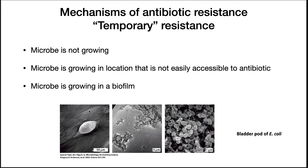This is shown on the slide — a biofilm, a bladder pod of E. coli growing in the bladder. This will protect the bacteria from treatment with antibiotics or will slow the effect of antibiotics. These tend to be temporary, and after a long time treatments will sometimes kill these organisms. Once an organism starts growing or moves to a different location, or a different antibiotic is used to break up the biofilm, the antibiotic becomes effective.